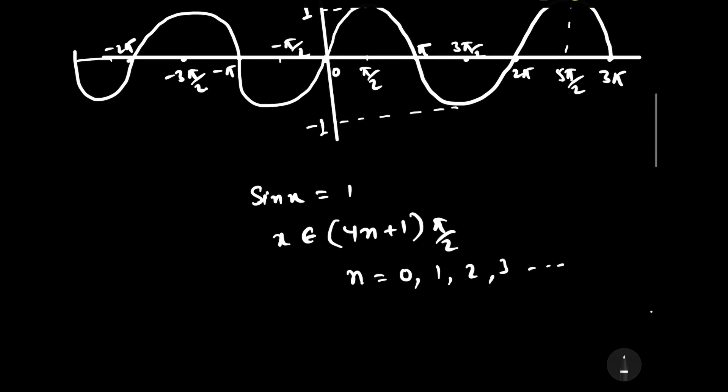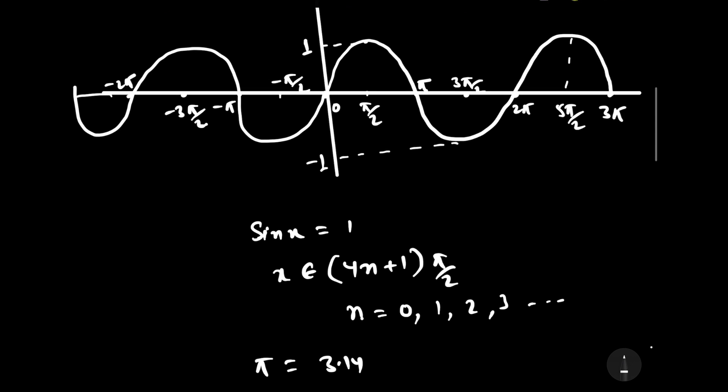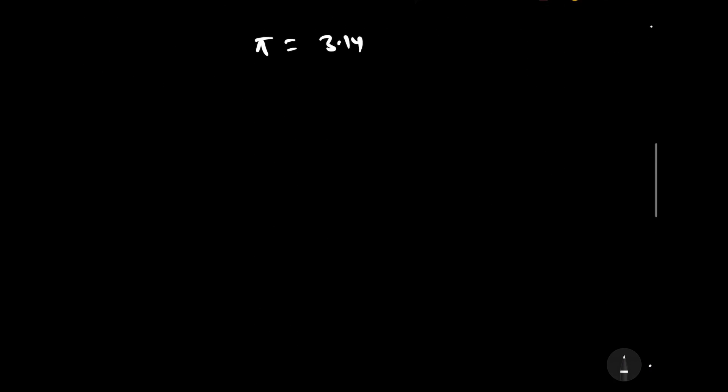And what is the value of π? The value of π is 3.14. It means we can say that this is 3.14, this one is 2 × 3.14, and this point is 3 × 3.14. Why are we writing 3π as 3.14 × 3? We will understand when we draw the graph of log x.